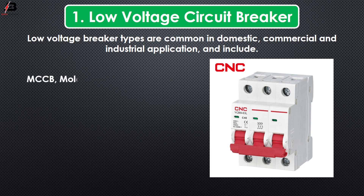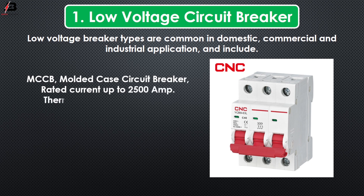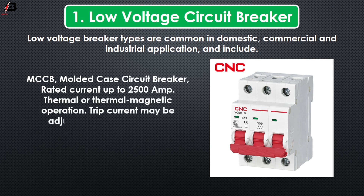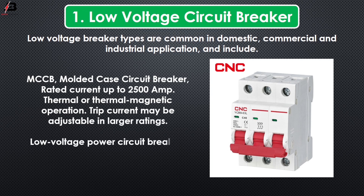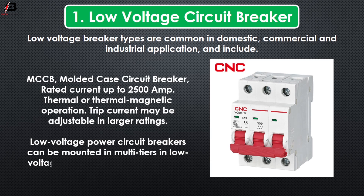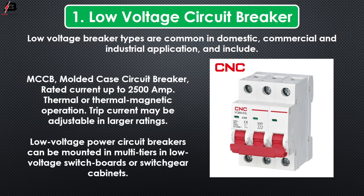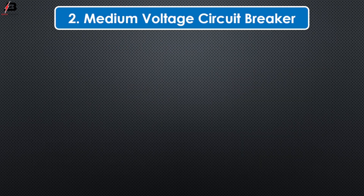MCCB — Molded Case Circuit Breaker. Rated current up to 2500 amperes. Thermal or thermal magnetic operation. Trip current may be adjustable in larger ratings. Low voltage power circuit breakers can be mounted in multi-tiers in low voltage switchboards or switchgear cabinets.